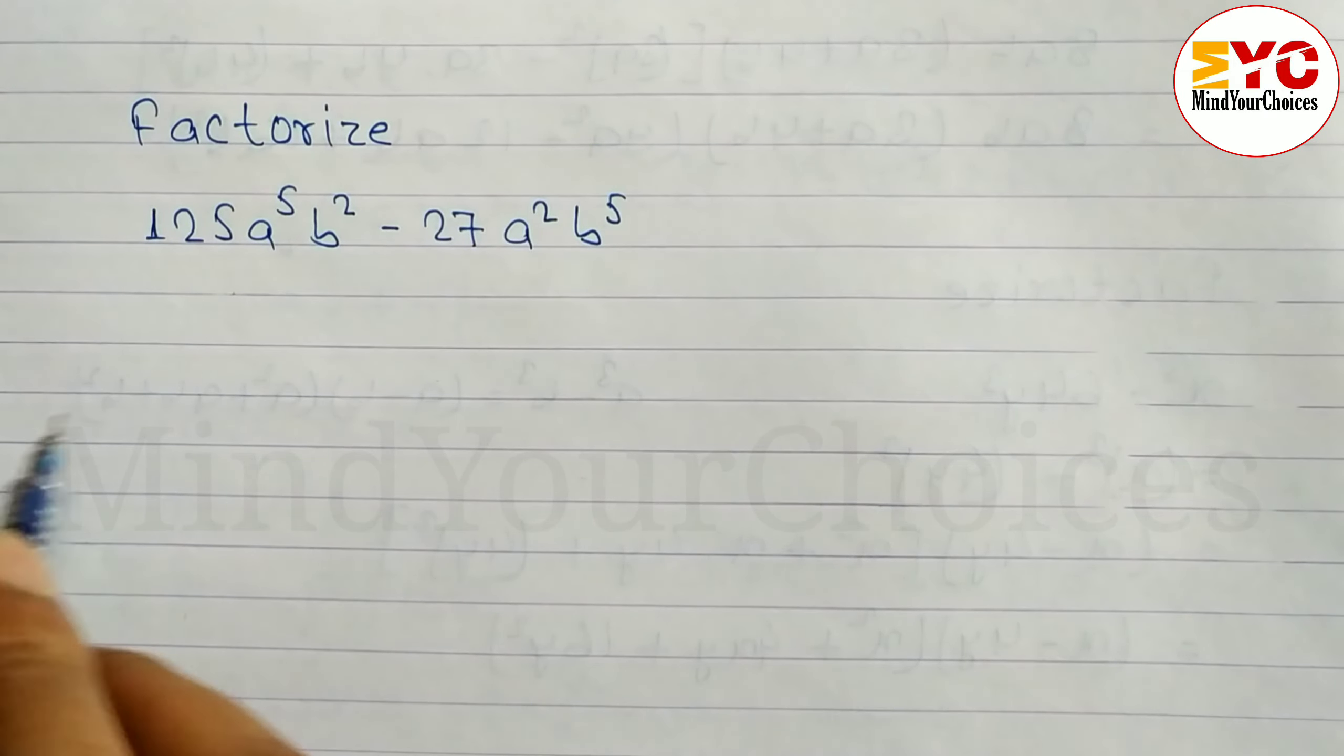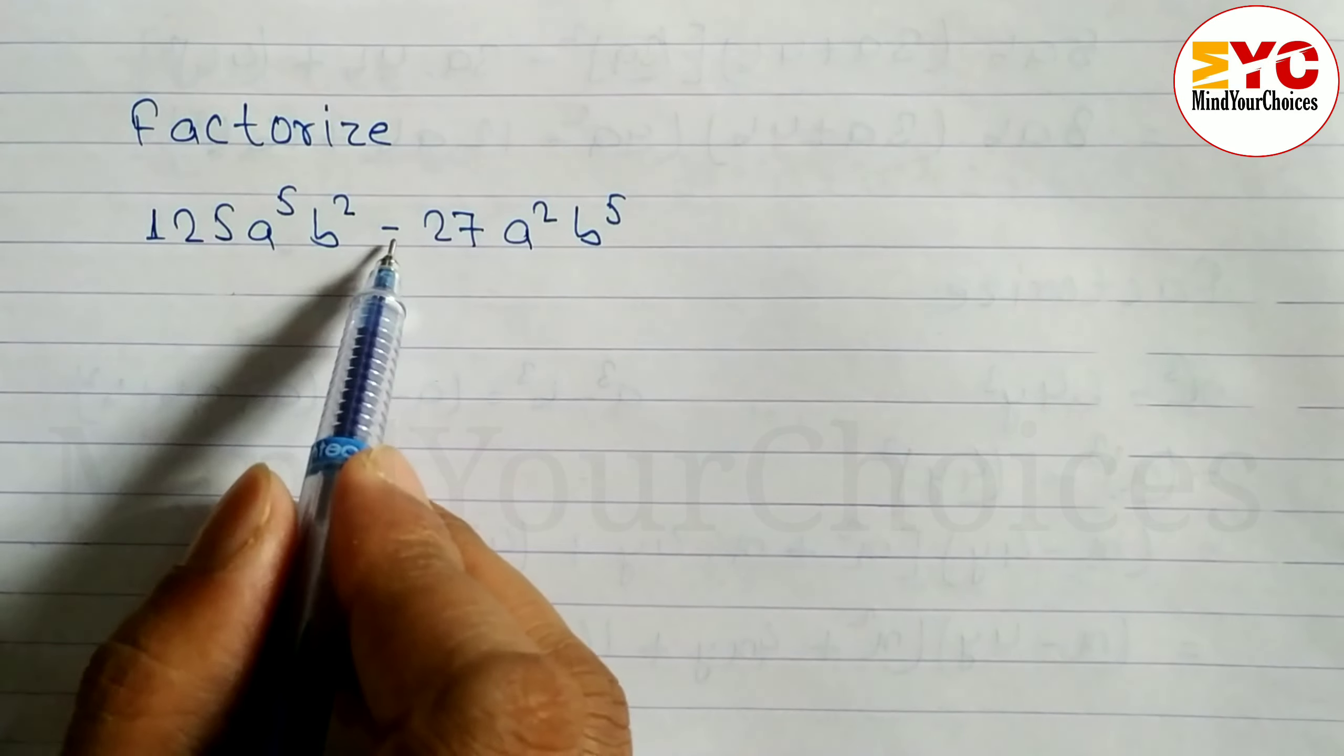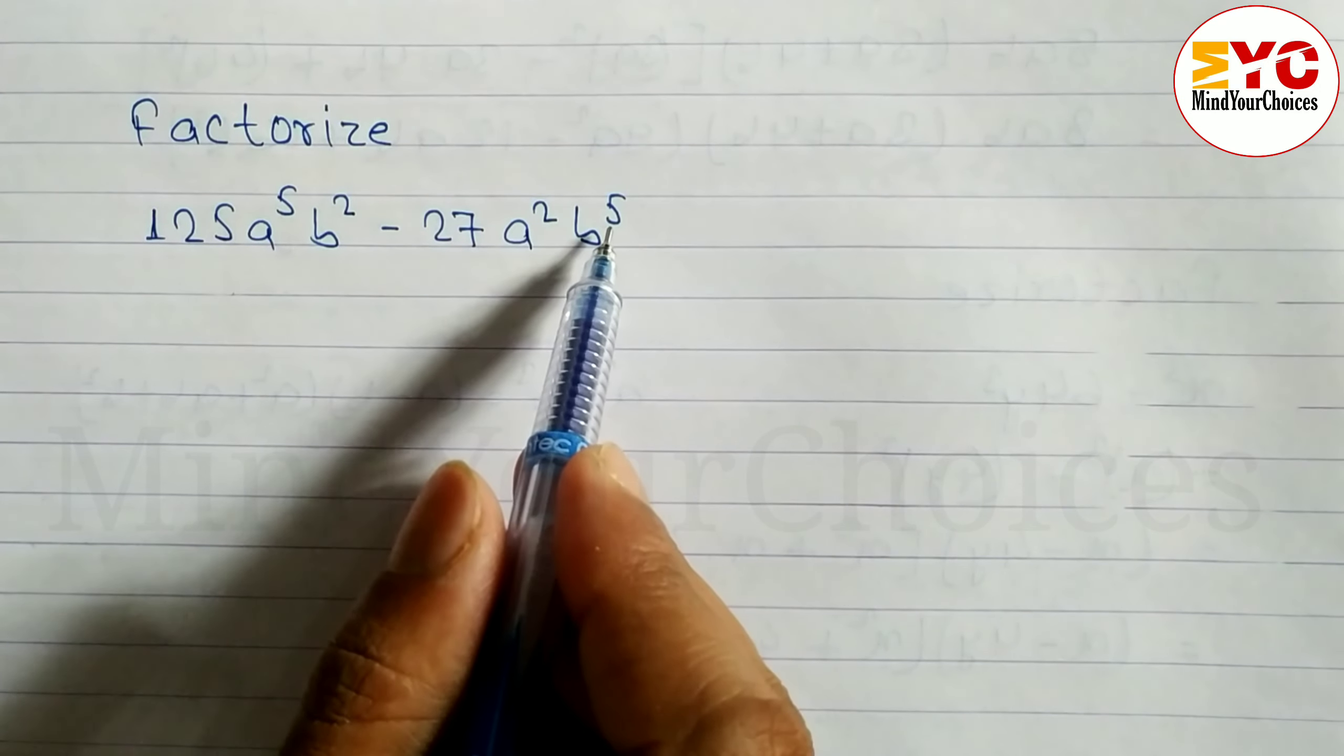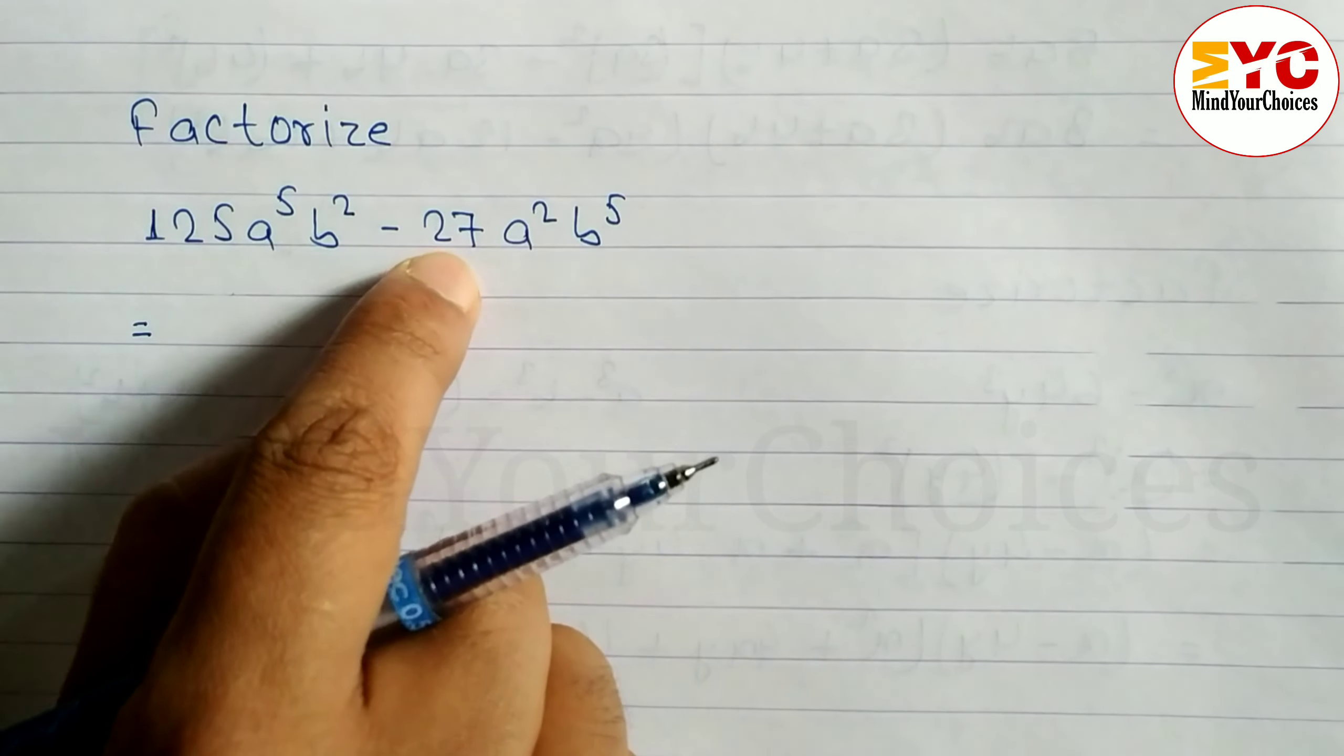Let's learn how to factorize. Here we have 125a⁵b² - 27a²b⁵. First, we need to take common factors. Looking at 125 and 27, there is nothing common between them.